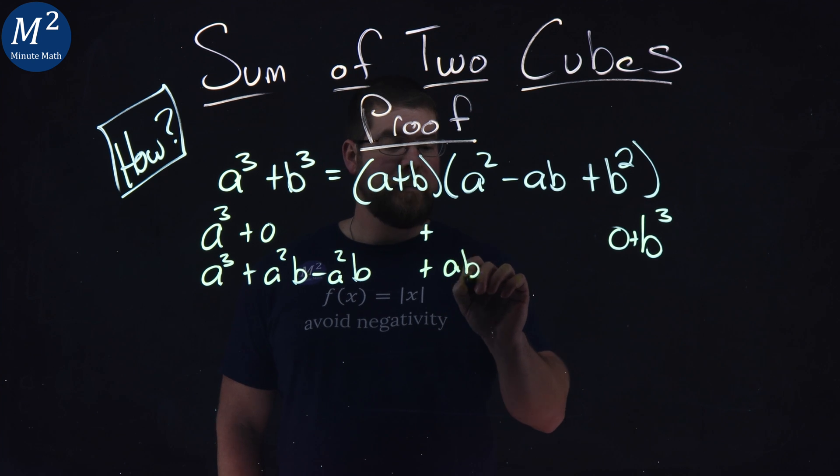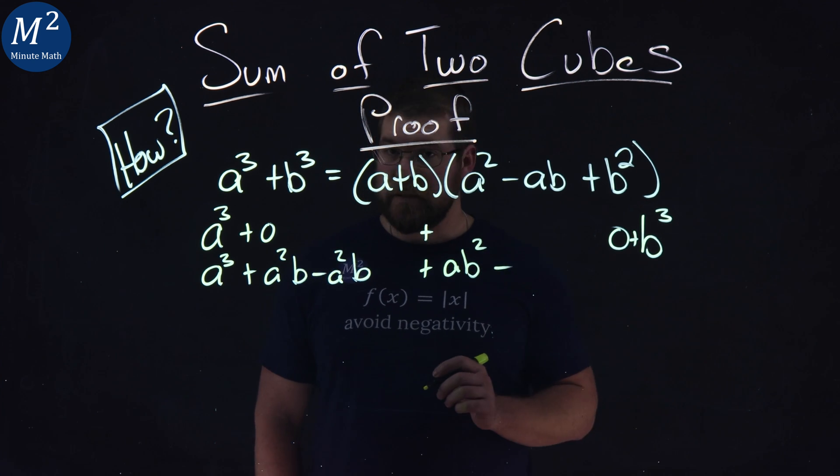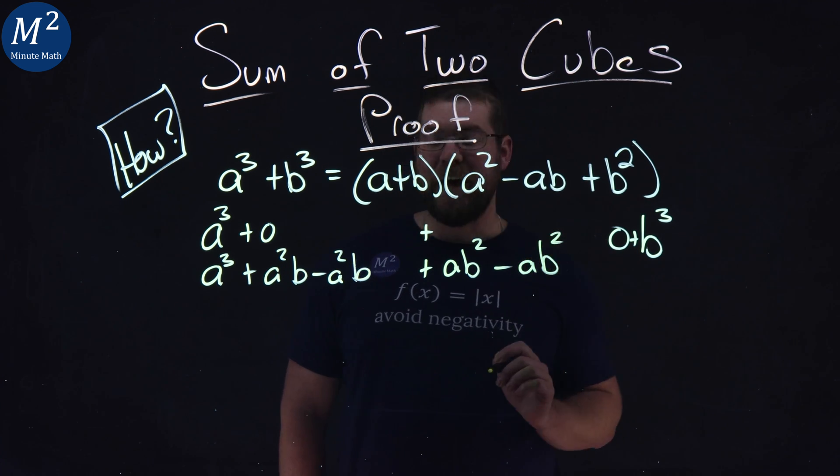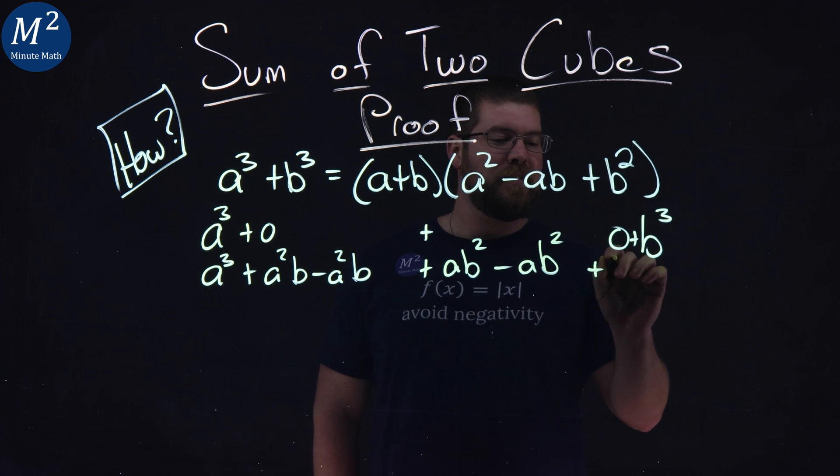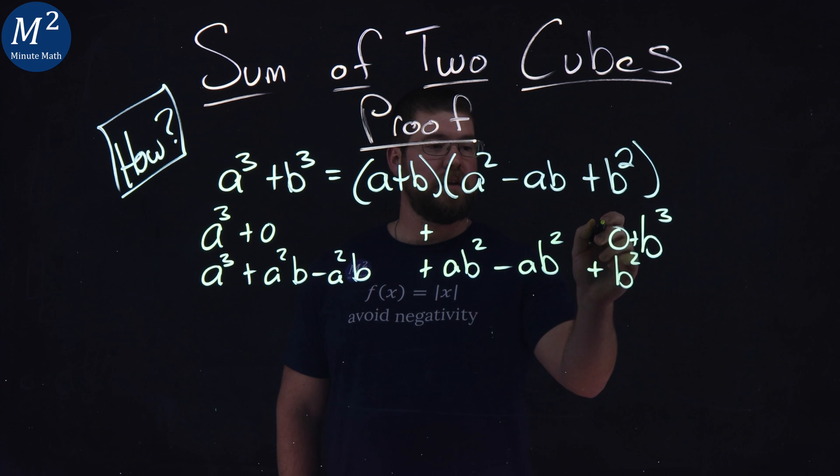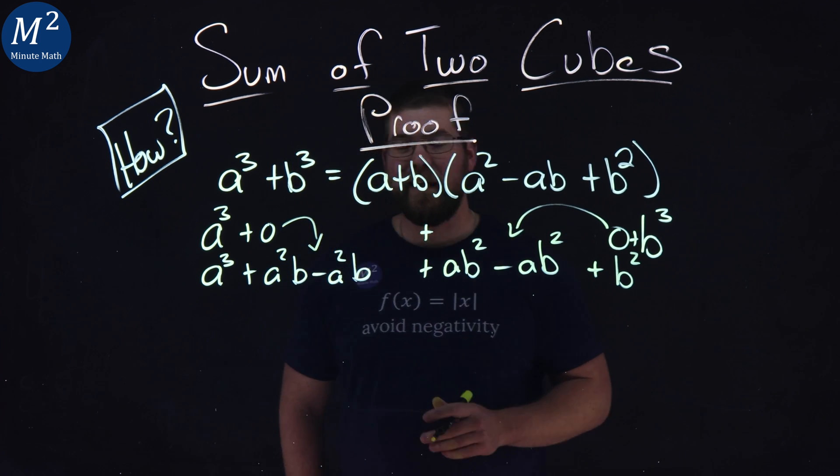Same thing here, instead of zero I'm going to have ab squared minus ab squared, got ahead of myself there. Plus, don't forget that b cubed that comes down. Again, here's our zero, right? That's the zero right here and that's the zero right there.